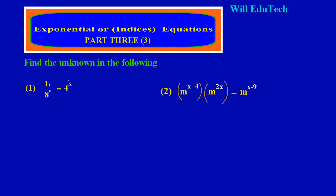Based on the inverse rule, we know that we can flip this and the power becomes negative. So if I flip this, I would have 8 raised to the negative 1, and that would be equal to 4 raised to the k power.